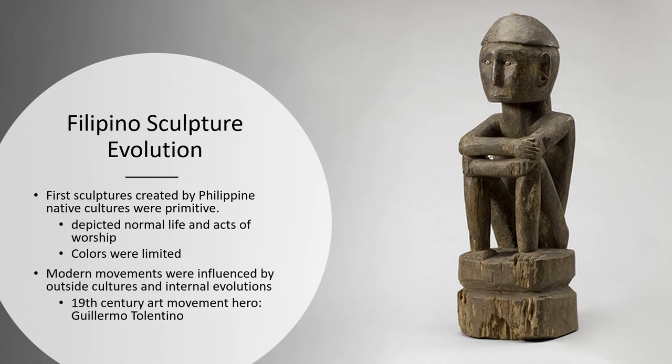The hero of this sculpture movement was Guillermo Tolentino. His most popular pieces are the Bonifacio Monument and the UP Oblation. He is one of the two national artists of the Philippines for sculpting.